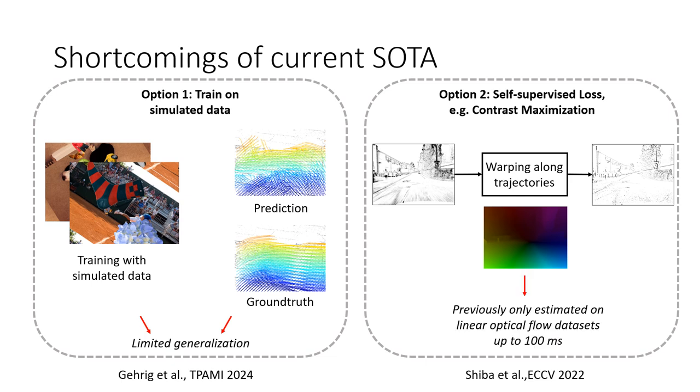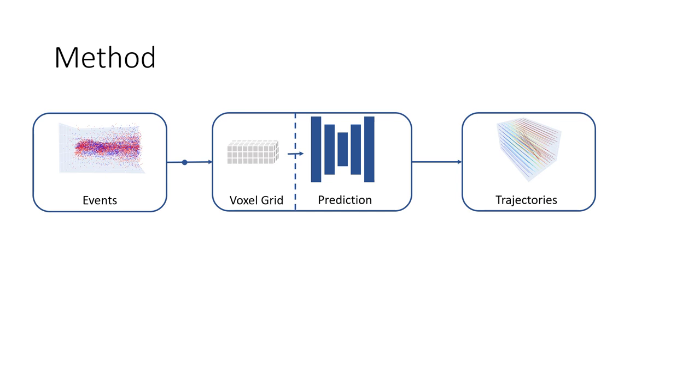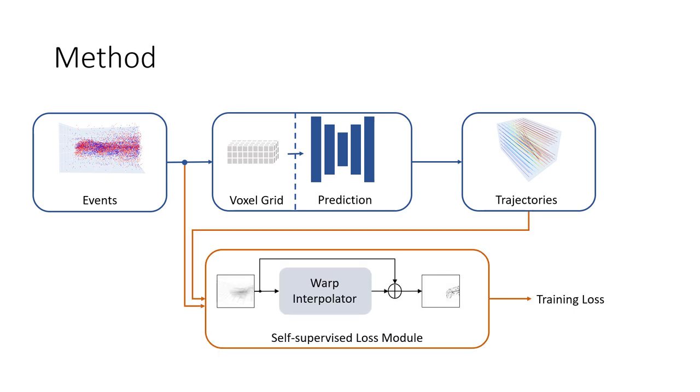However, this approach has previously only been estimated on linear optical flow datasets with prediction times up to 100 milliseconds. We see here the inference pipeline introduced earlier. For training it can be extended with a self-supervised loss.